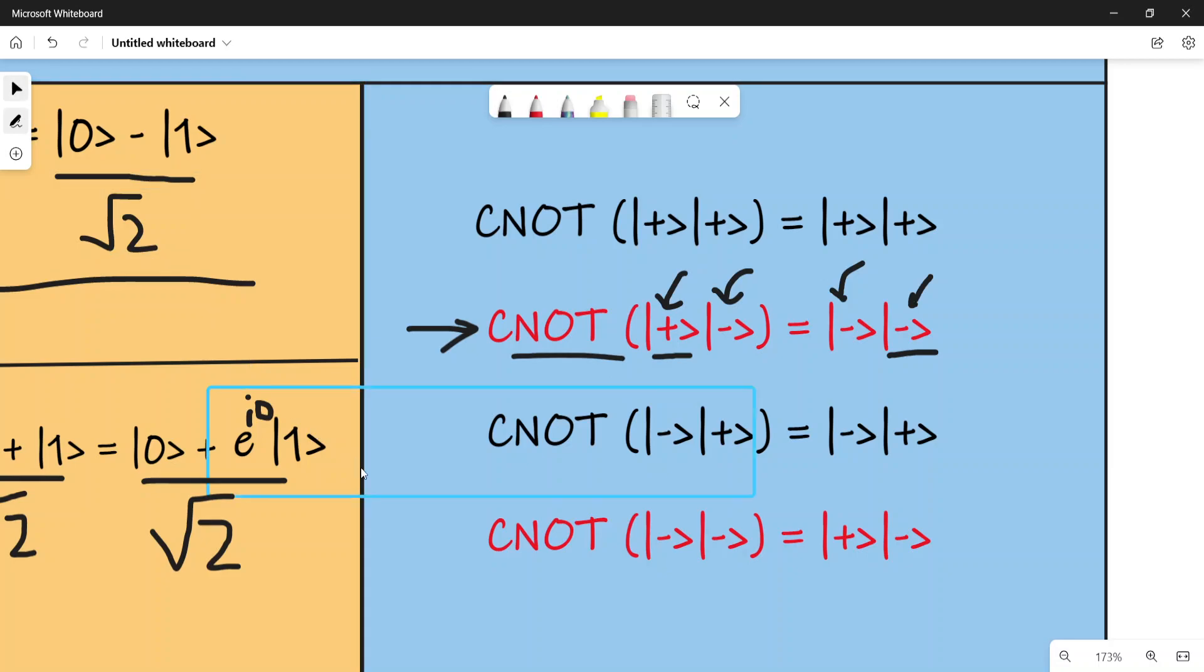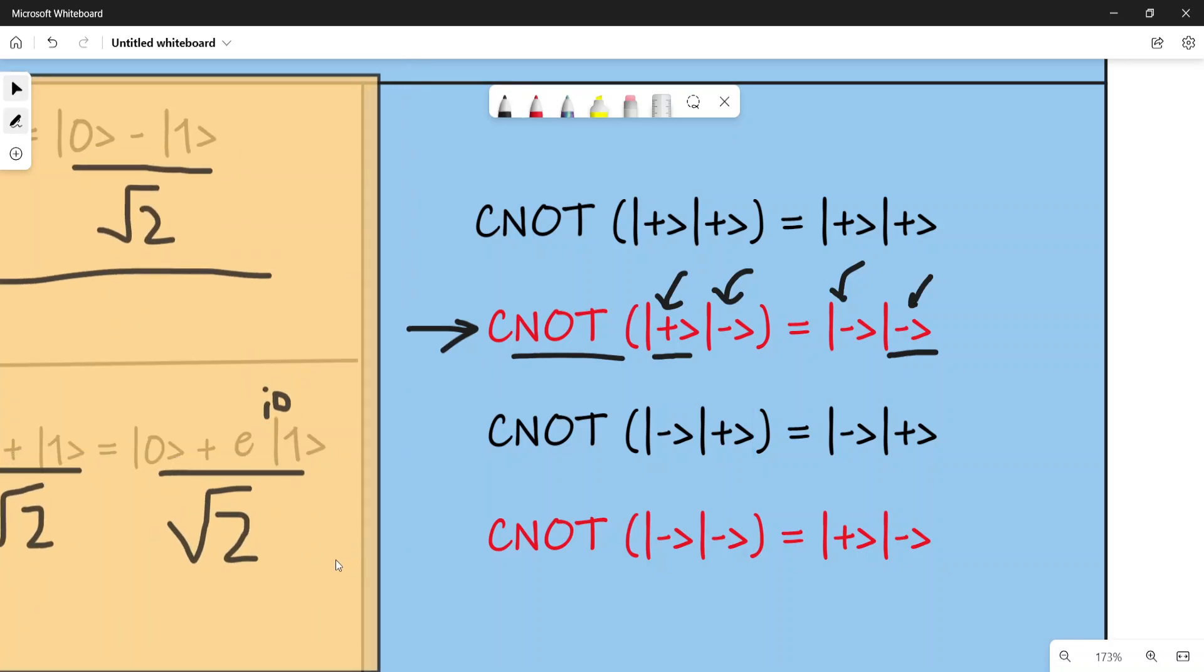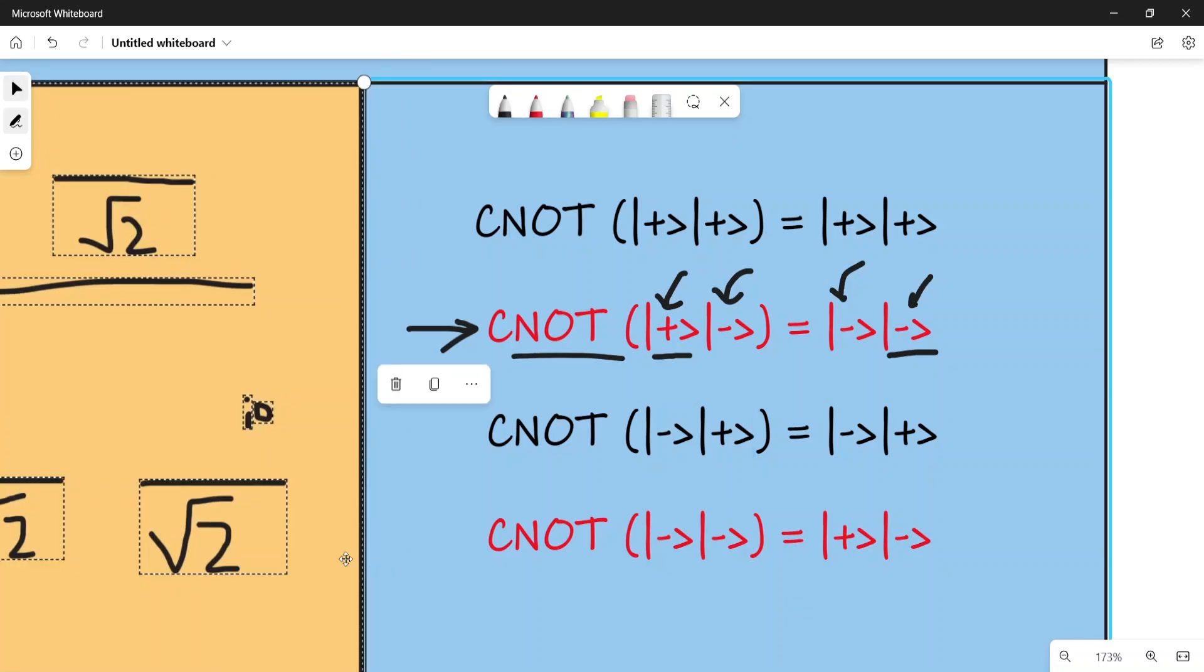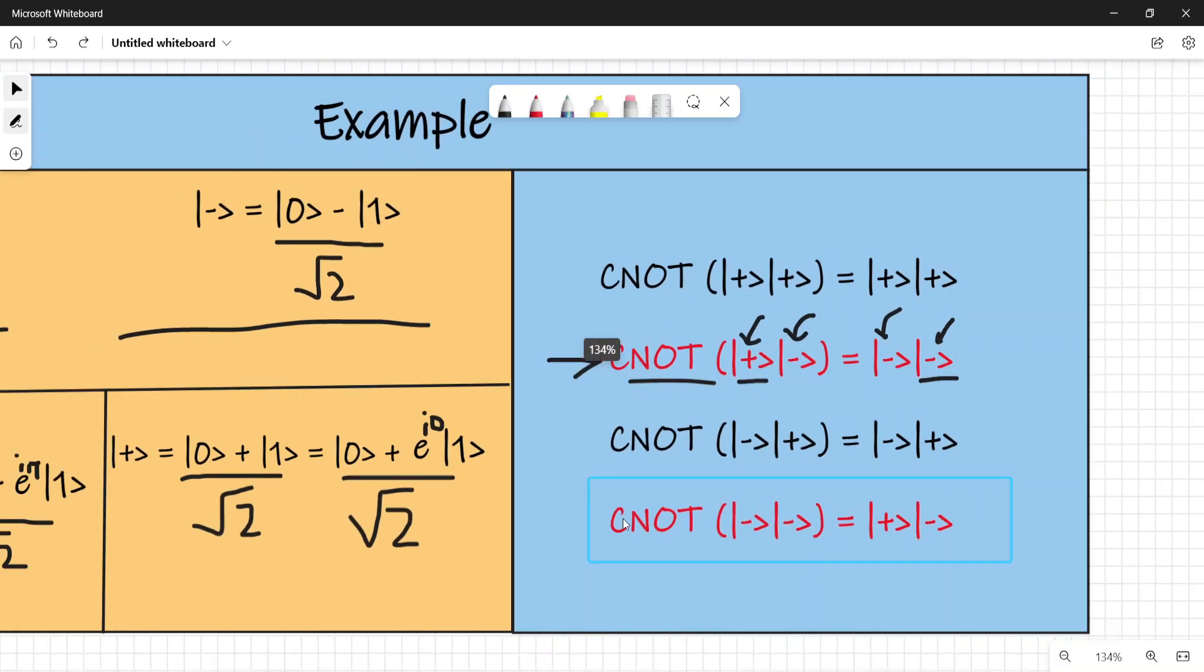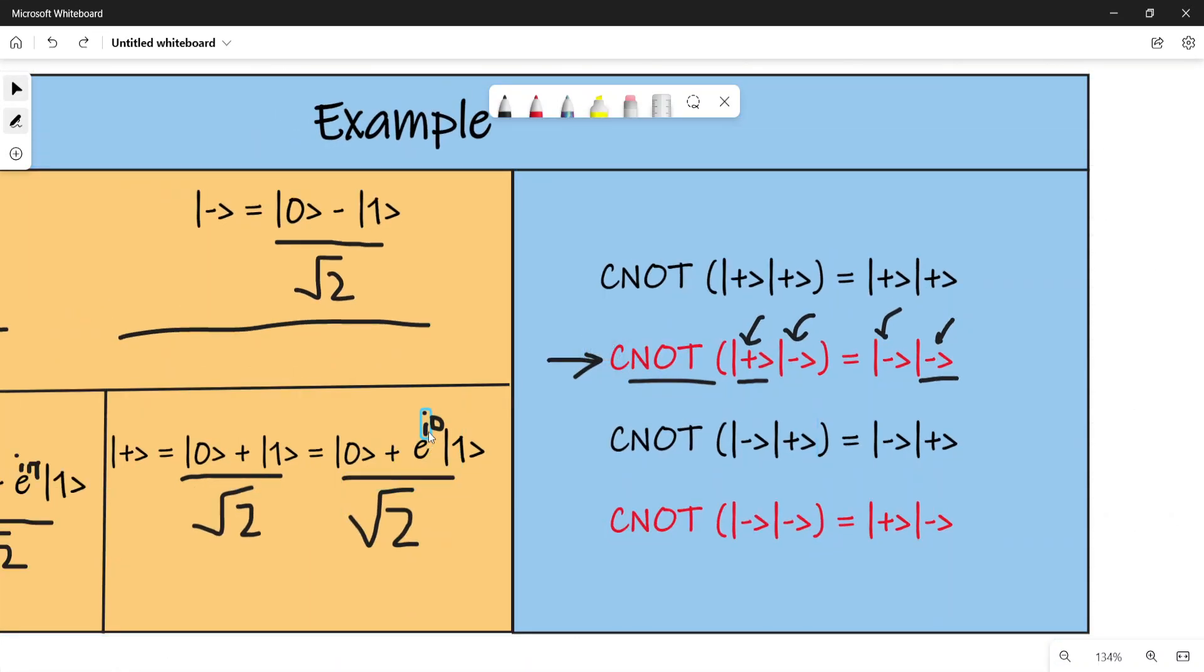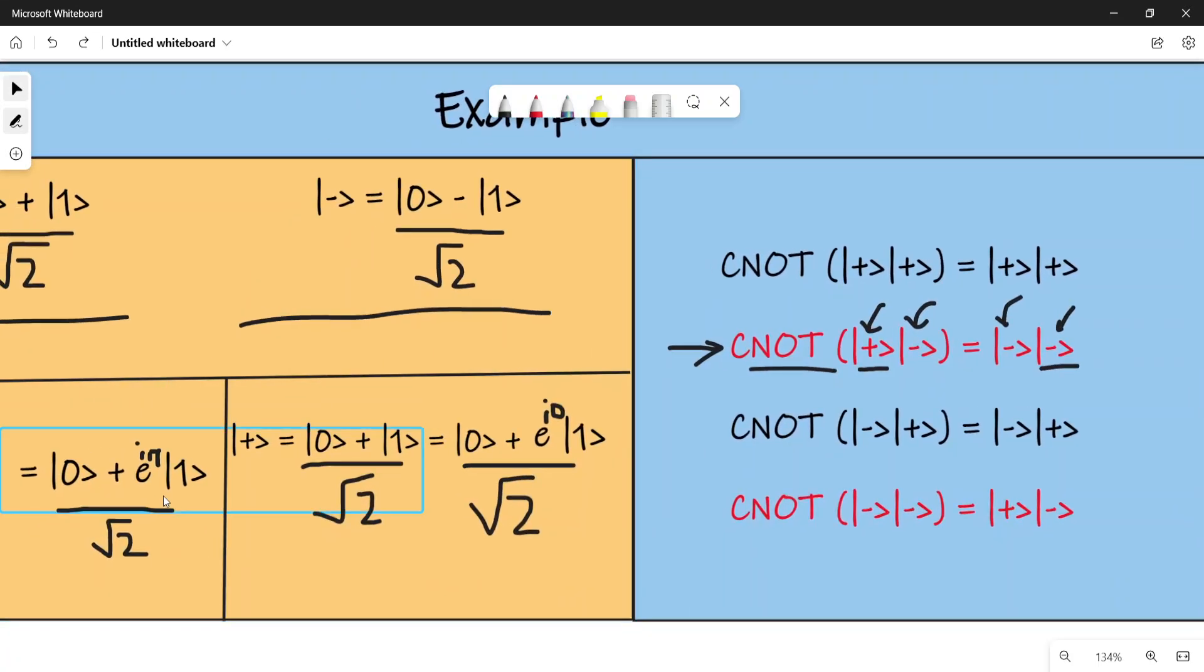Previously, the ket plus qubit had a phase of e^(i0). But now, as you can see, it's in the ket minus state after the operation, and now it has a phase of e^(iπ). This phase of e^(iπ) previously belonged to the second qubit.